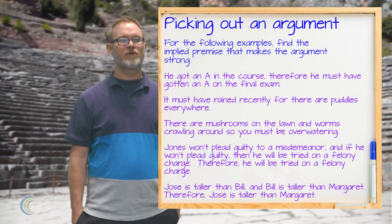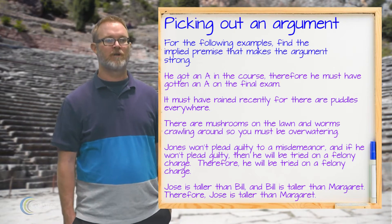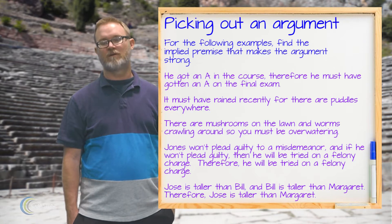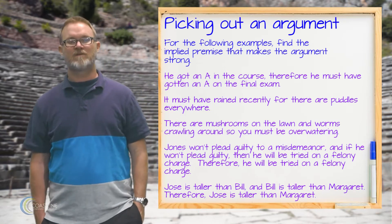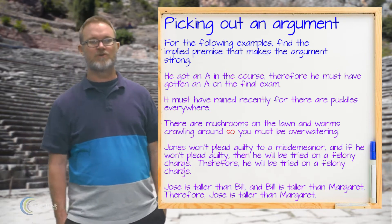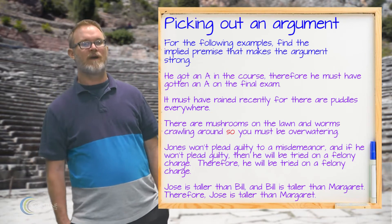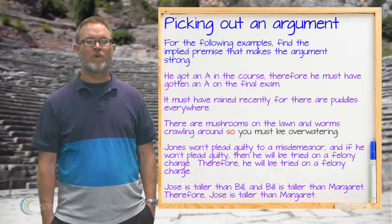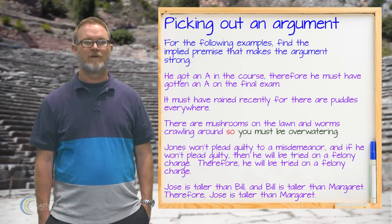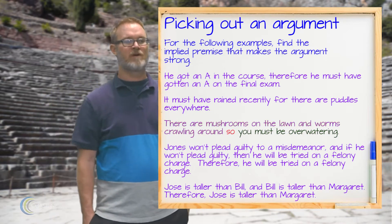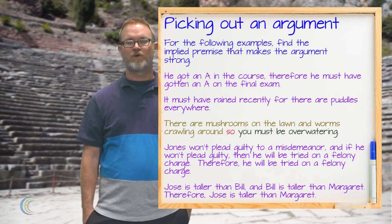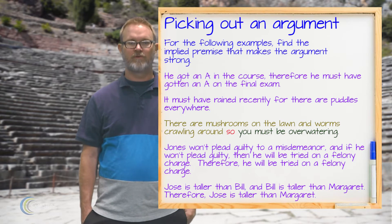Next it says: there are mushrooms on the lawn and worms crawling around, so you must be over-watering. Here you have the 'so' indicator, which is a conclusion indicator, meaning 'you must be over-watering' is the conclusion. The premises are 'there are mushrooms on the lawn' and 'worms crawling around.'